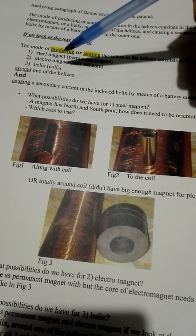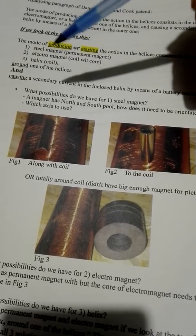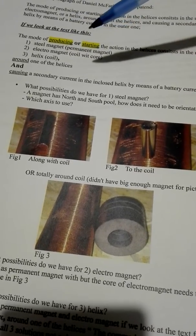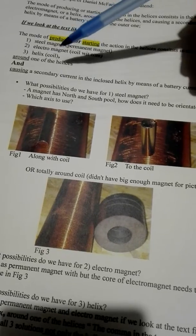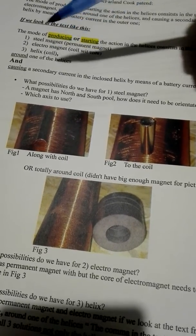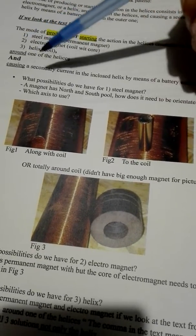So it's stated here that it is while producing or starting. So we can use three different ways. We can use a steel magnet, an electromagnet, or a helix around one of the helixes.